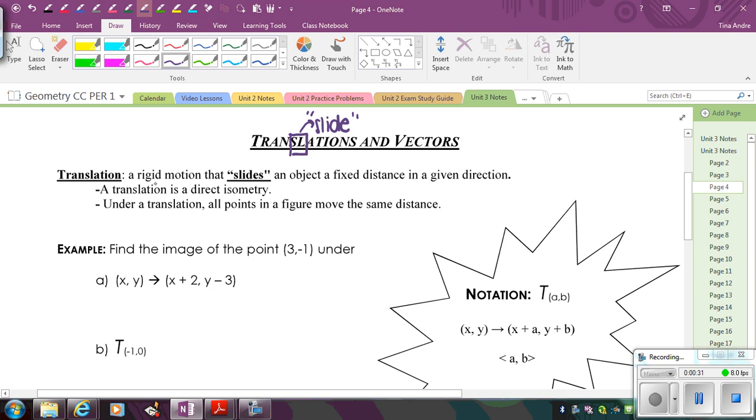So a translation is a rigid motion, which means that if you translate an object, it'll stay the same shape and size. So it's not going to change anything about the object. And you're going to always translate in a certain direction and a certain distance. So the distance will be fixed, which means it'll stay the same, and the direction will be specified as well.